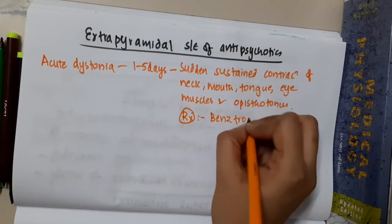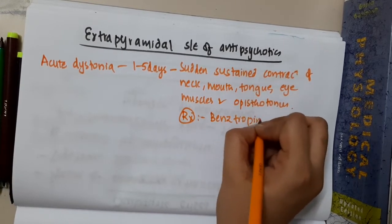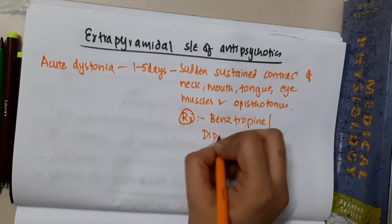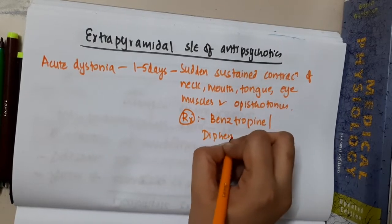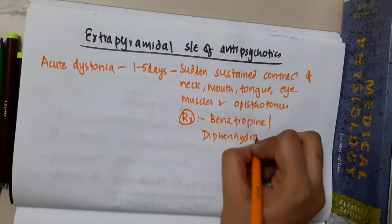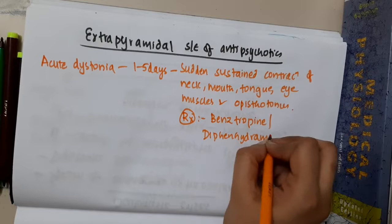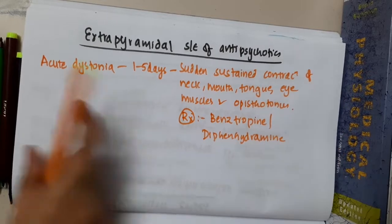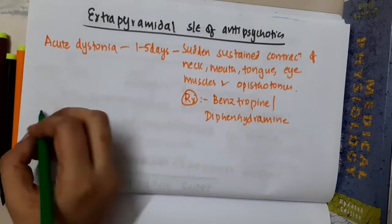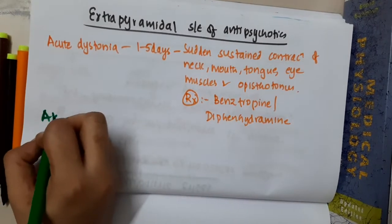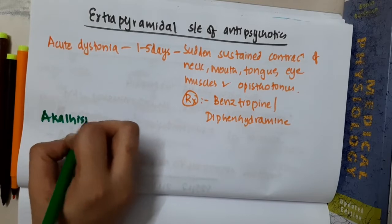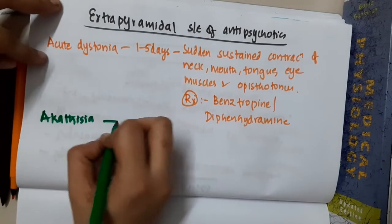The treatment of acute dystonia is benztropine or diphenhydramine.